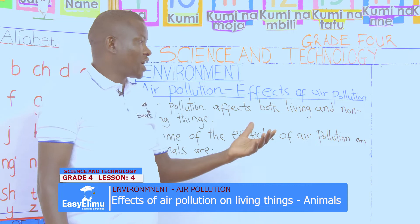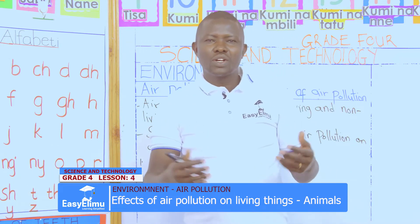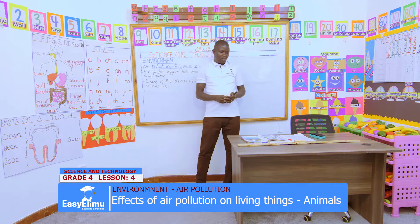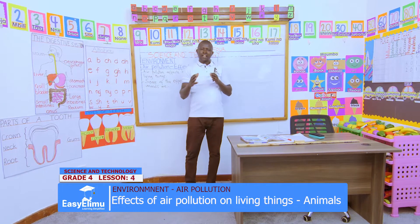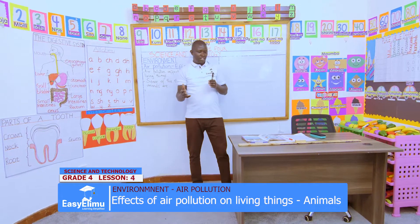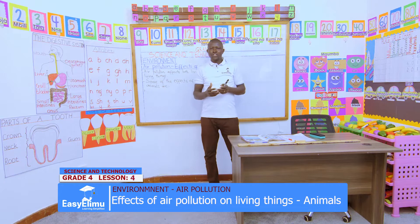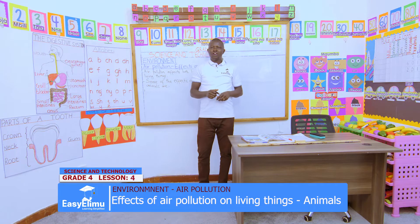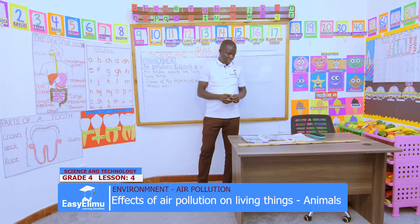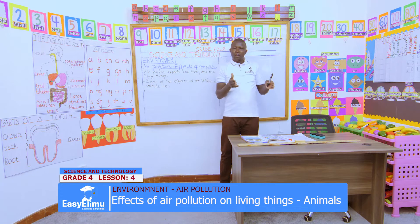Under air pollution, today we look at the effects of air pollution. But before we do our work for today, I would like to remind ourselves what we learnt in the previous lesson on clean and polluted air. We saw that polluted air may have been contaminated by air emitted by vehicle exhausts, or a foul smell from the toilets, or smoke from the kitchen when our parents are cooking. Those were some examples of how air is polluted.